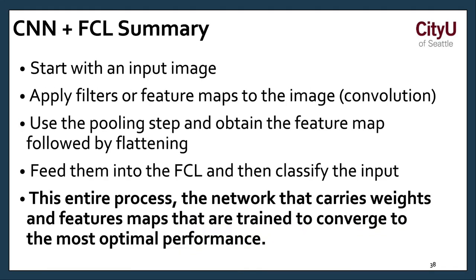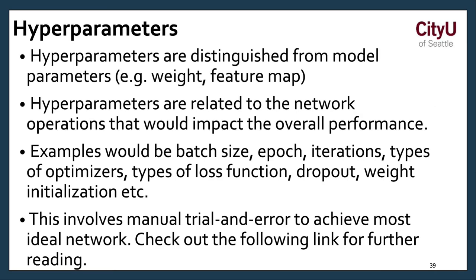To summarize, you start with an image. And then you apply different filters. Think about your Snapchat filters to highlight some of the features. And basically, keep doing that. And then add the pulling step and obtain the feature map. Followed by you flattening it into a 1D array because we have to deal with data points. And then feed them to the FCL. Then classify the input. This classification, this entire process, the network that carries the weight and features maps are trained to converge to the most optimal performance.